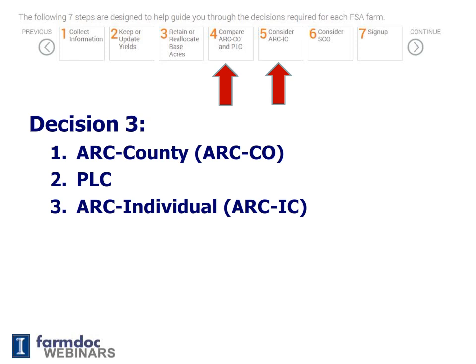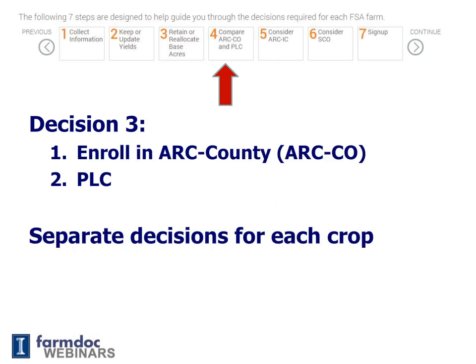Steps four and five deal with the program choice for receiving commodity program payments. You have three options: ARC County, PLC, and ARC Individual. Step four suggests that you select ARC County or PLC for each crop on your FSA farm. You could split the decision — for example, if you have wheat and soybeans on a farm, you could put wheat in ARC County and PLC on soybeans. These are separate decisions for each crop, which is why this is divided into two steps.